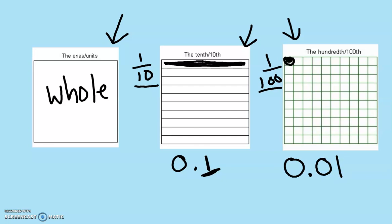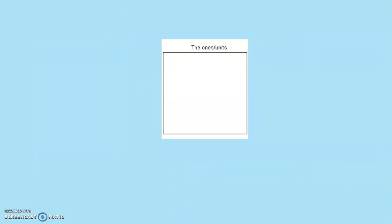You can think of it like money. A whole is like a dollar. Ten dimes equals a dollar, so one dime written as cents is ten cents — that's the same as 0.10. And one penny is one hundredth of a dollar, so we write it 0.01. So again, for decimals, a flat is now called a whole, not a hundred.